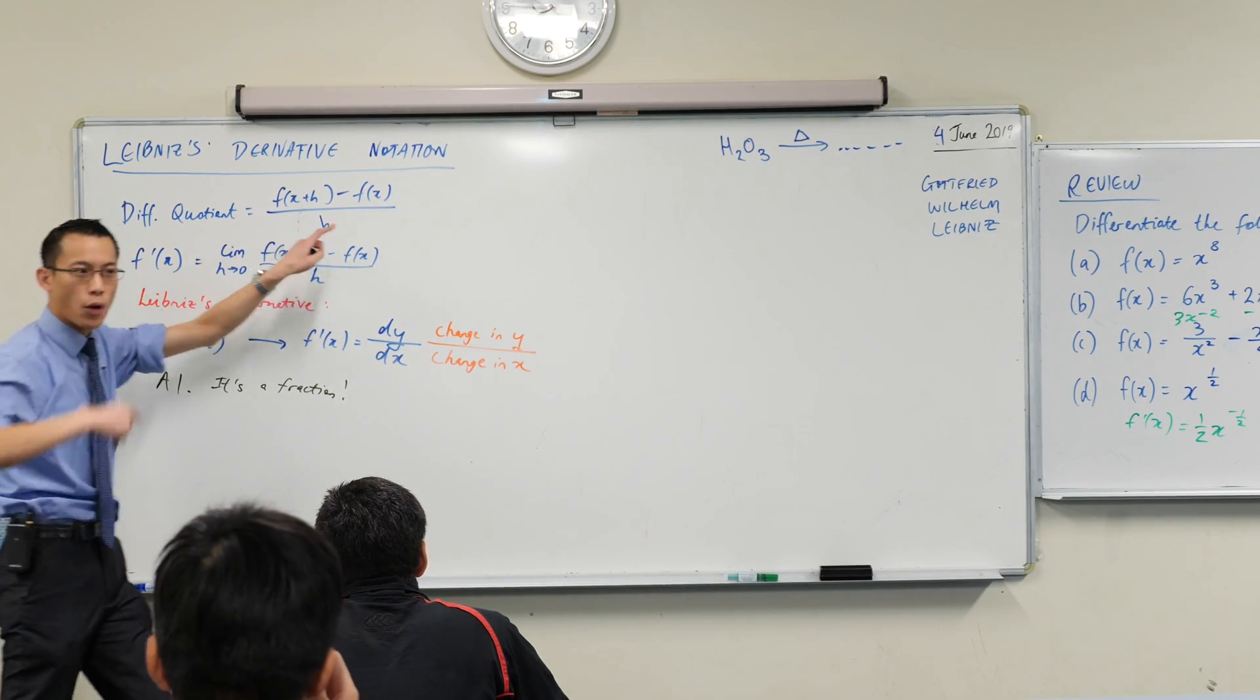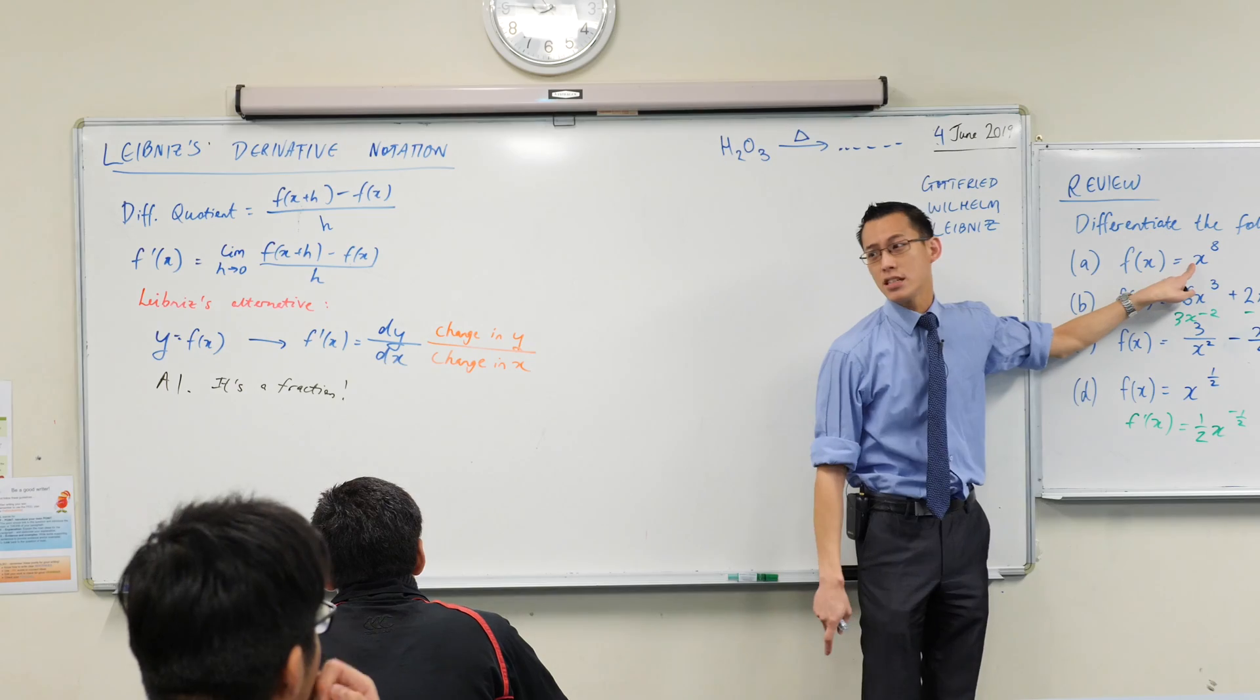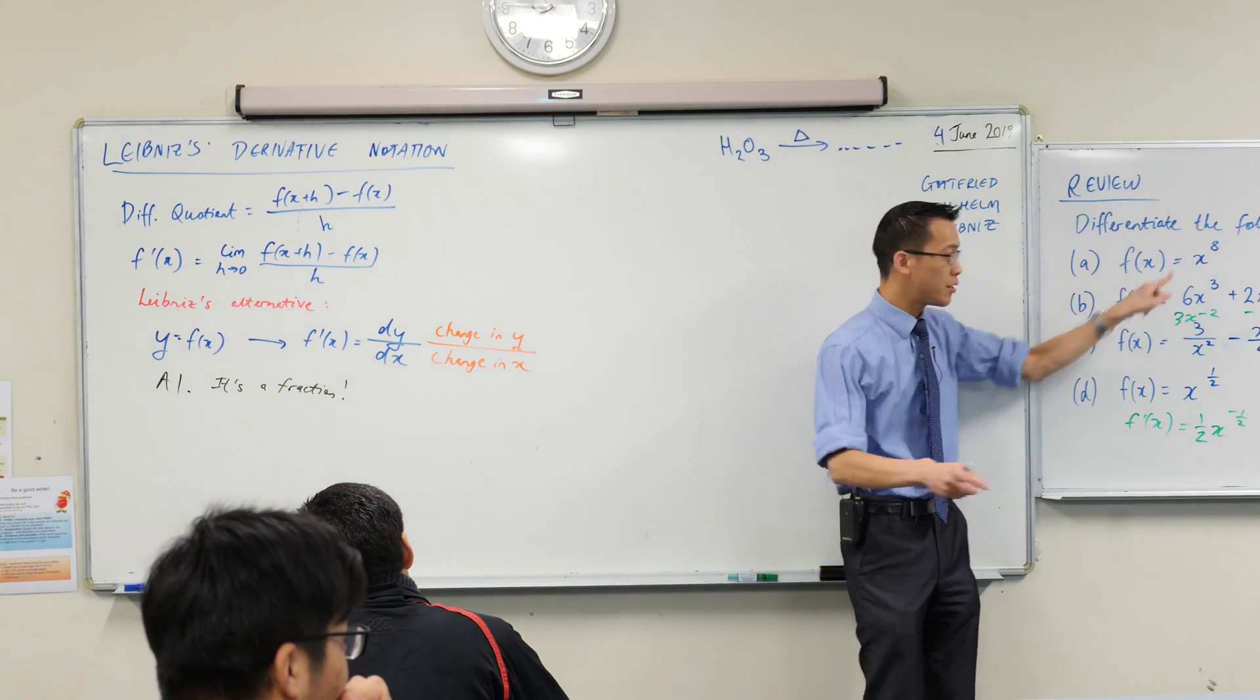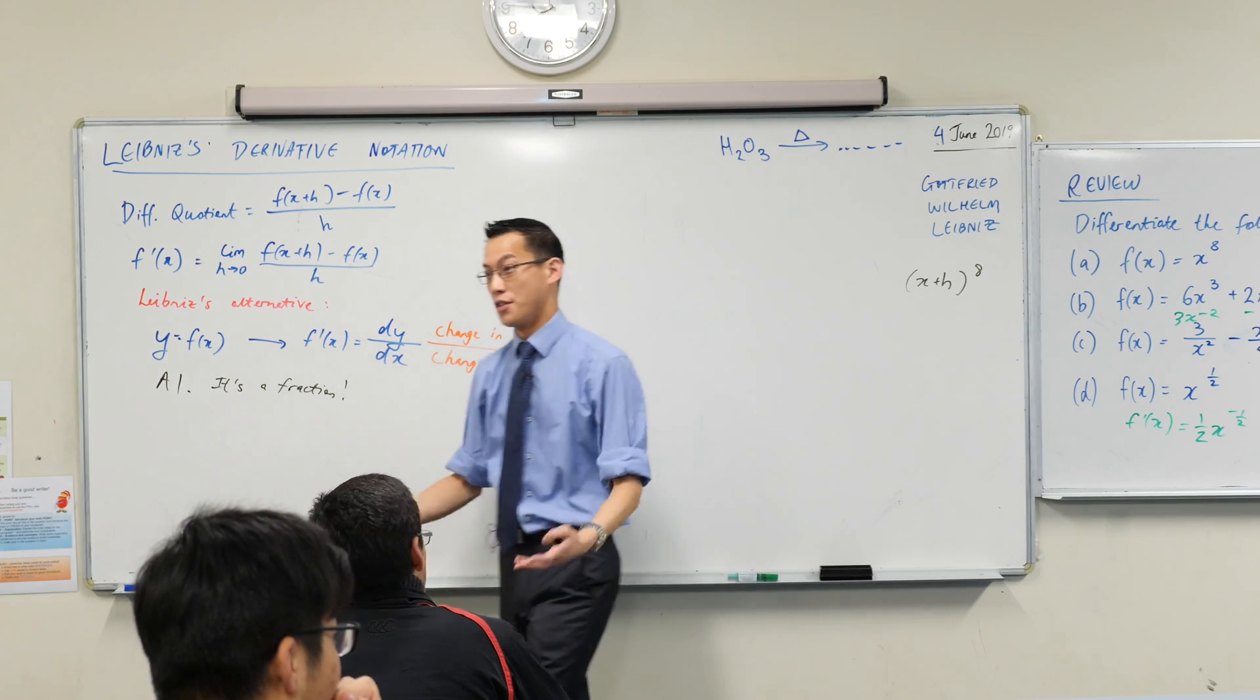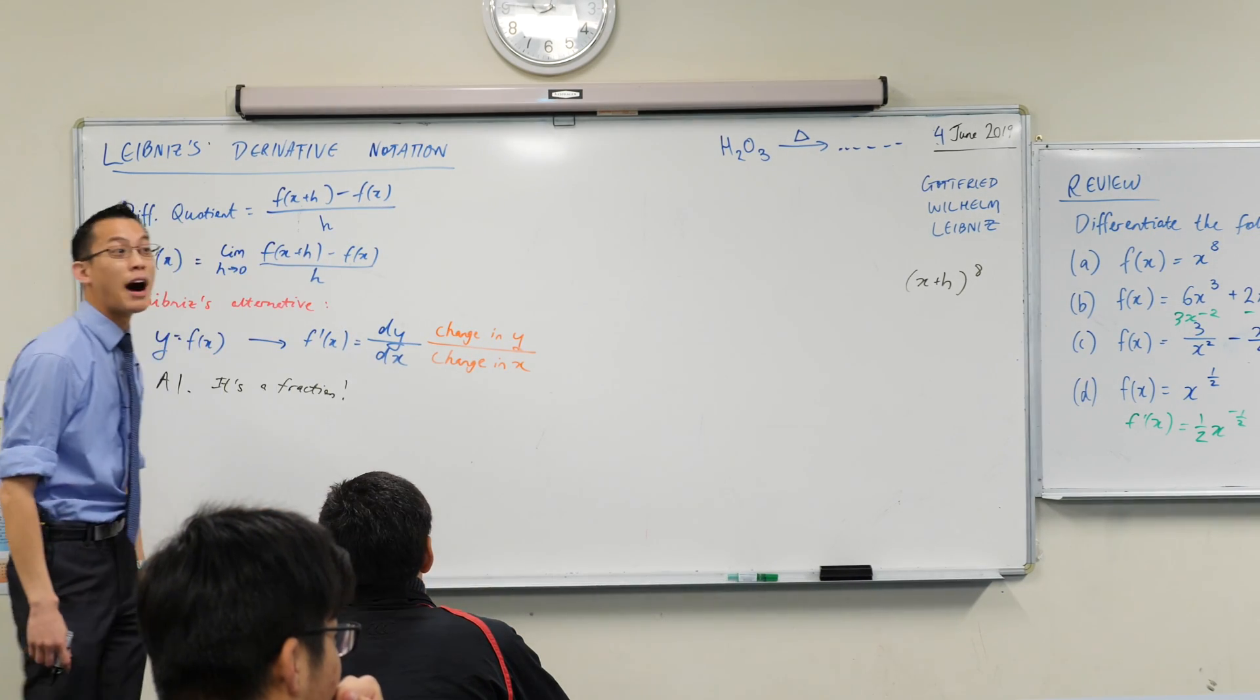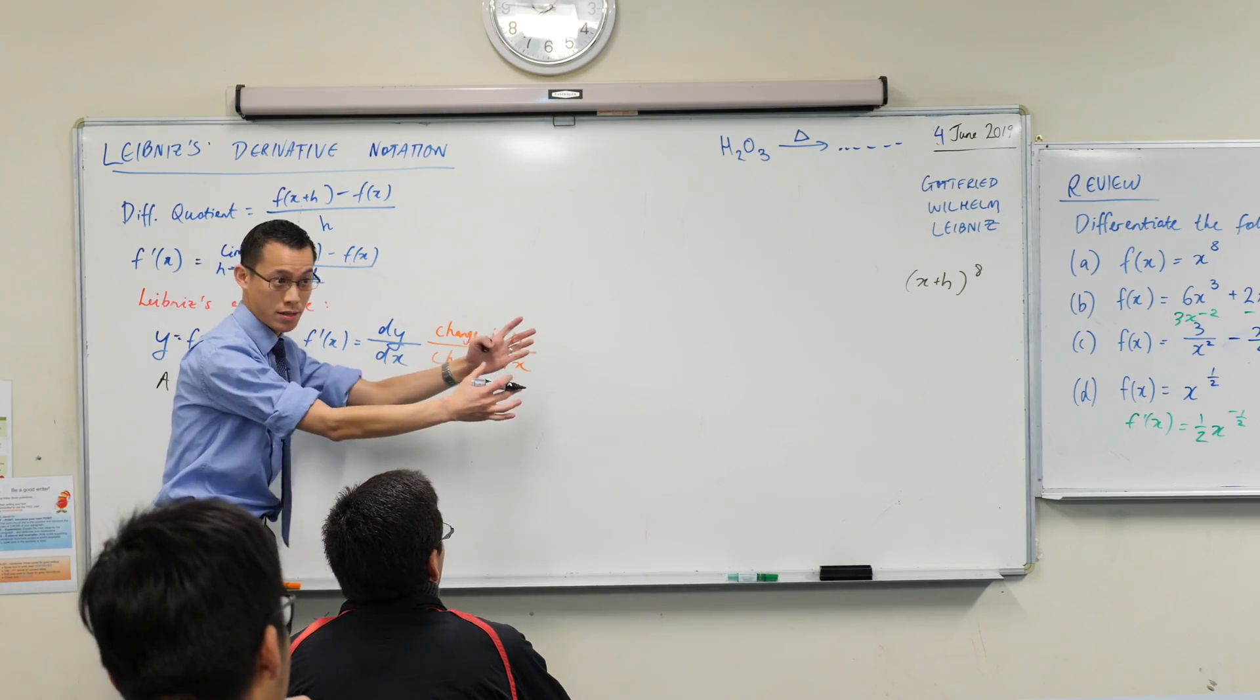Right? This f dash notation, it kind of disguises the fact that what you're doing is this. This is what you're doing, but we've automated this process because we proved it yesterday. We're like, I don't need to go through first principles for this, which is a big relief because for first principles, I would have to work out what on earth that is. And I don't even know what that is. Like, that power is too high for me and it would take me forever, right? It would just be disgusting algebra.